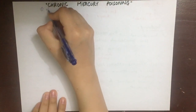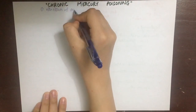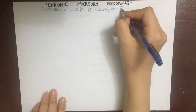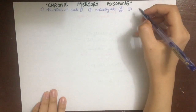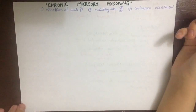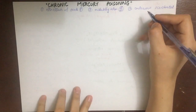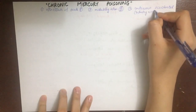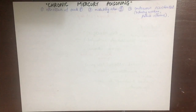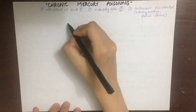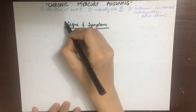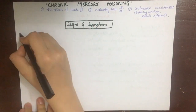Chronic mercury poisoning can occur as the after-effects of an acute attack, from medically administered mercury used unwisely, or from continuous accidental absorption — for example in people who manufacture mercury thermometers, mirrors, or barometers, or police handling fingerprint powder.